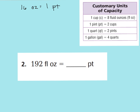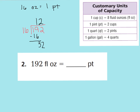Let's go ahead and do 192 divided by 16. Looking at our hundreds place, we can't divide 1 hundred into 16 groups, so let's look at our 19 tens. We can put one group of 10 in each of our 16 groups. One times 16 is 16. We subtract and have three tens left over, then bring down our two ones to get 32 ones. With 32 ones and 16 groups, we put 2 in each group. 2 times 16 is 32, with zero left over. So 192 ounces equals 12 pints.